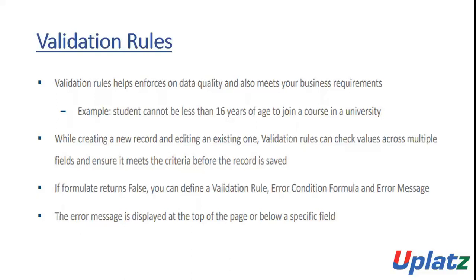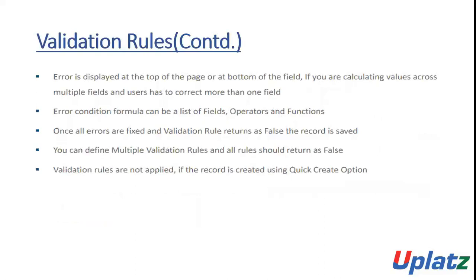Validation rules can check values across multiple fields and ensure they meet the criteria before a record is saved. If the formula returns true, you can define a validation rule error condition formula and error message. The error message is displayed at the top of the page or below a specific field. The error condition formula can be a list of fields, operators, and functions. Once all errors are fixed and the validation rule returns false, the record is saved. You can define multiple validation rules, and all rules should return false. Validation rules are not applied if the record is created using the quick creation option.